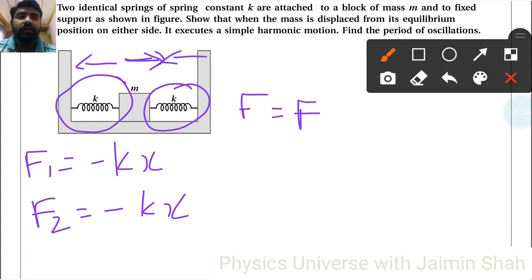Now according to equilibrium of force, F is equal to total F1 plus F2, minus kx minus kx. So that will be minus 2kx. So this is total restoring force for the object because of springs.